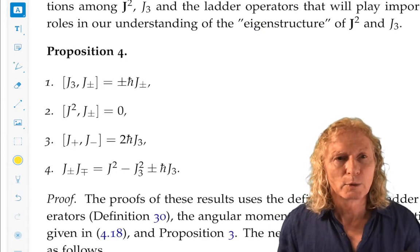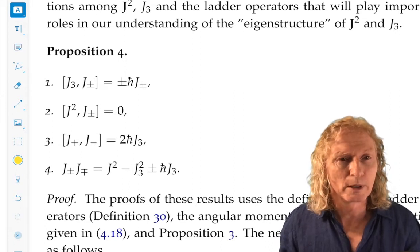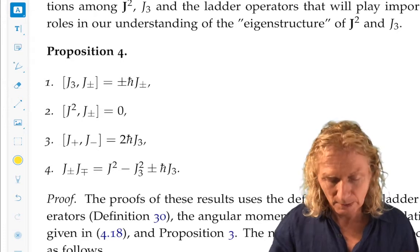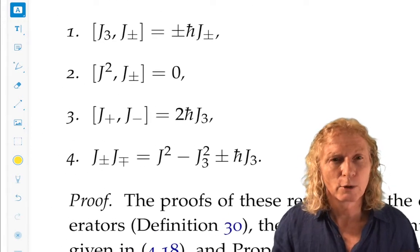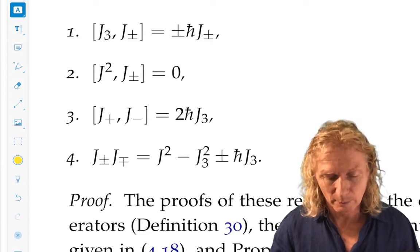Commutation relations between the ladder operators in j3 and j squared, as well as the ladder operators among themselves, are crucial. This proposition gives us essentially all the results we need, and it is the heart of the theory we're going to be developing.